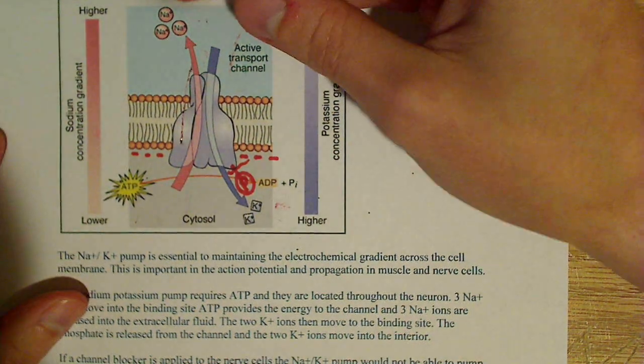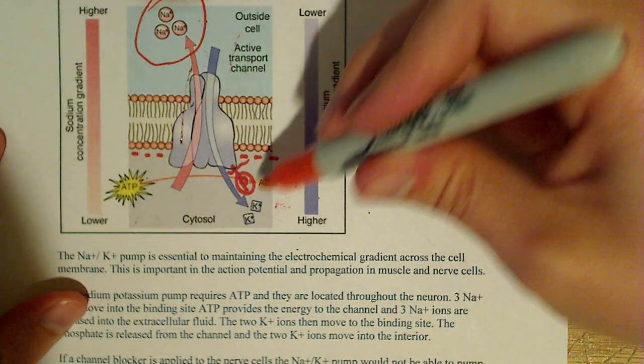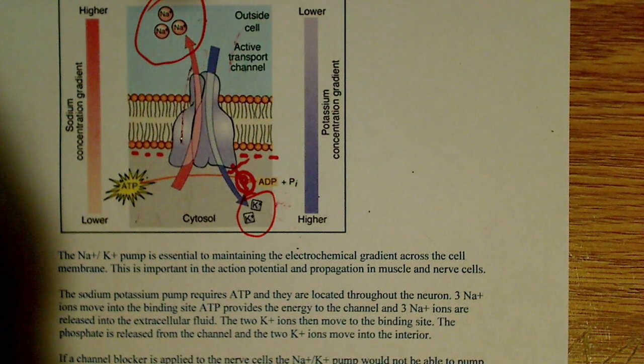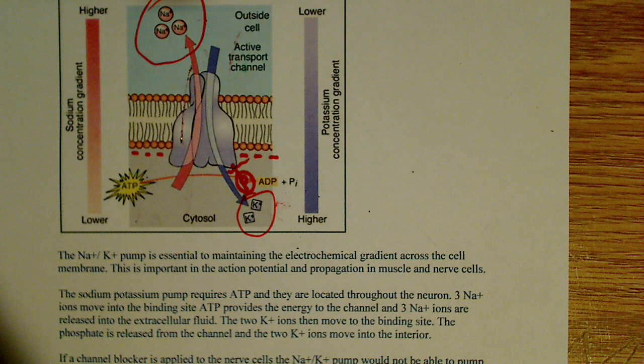And as you can see, the net result is three Na+ and two K+ ions, two potassium ions are being moved. So that's the whole result.